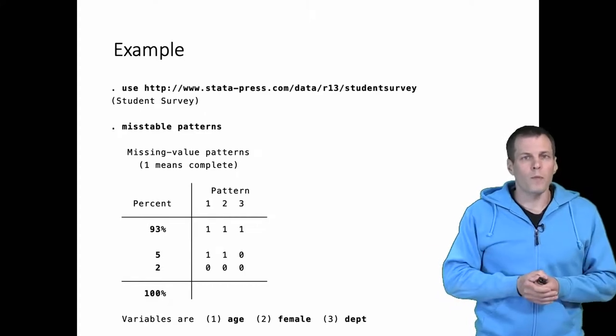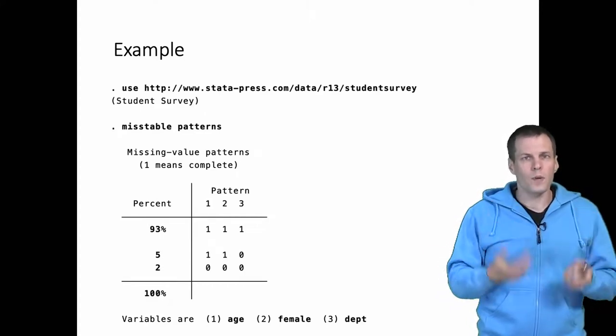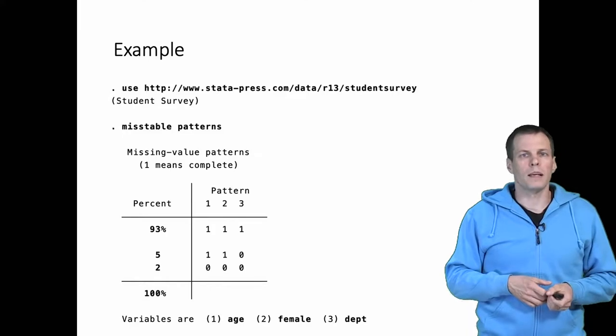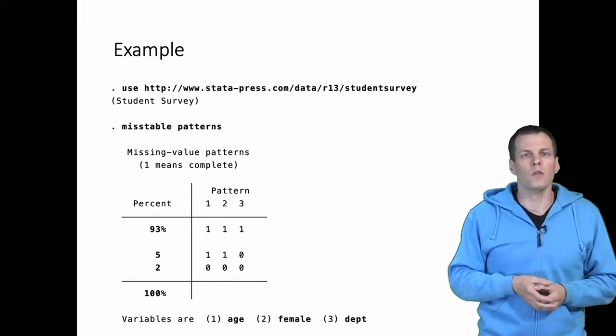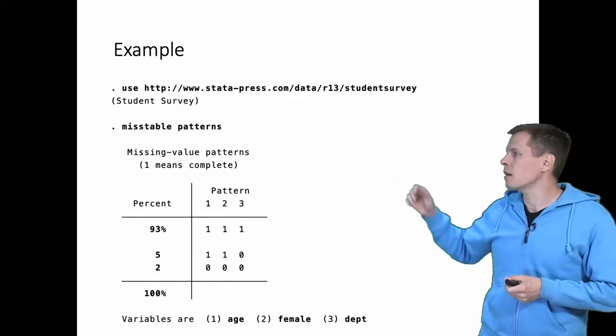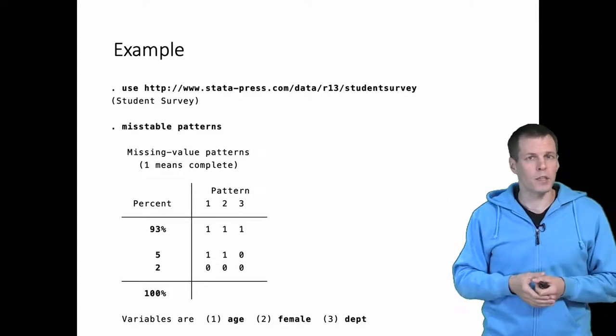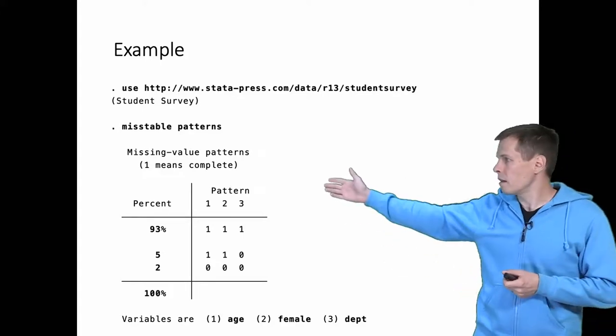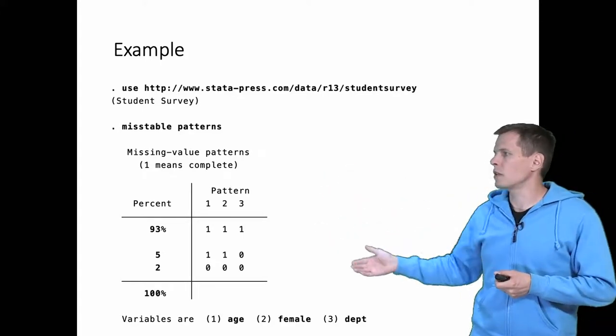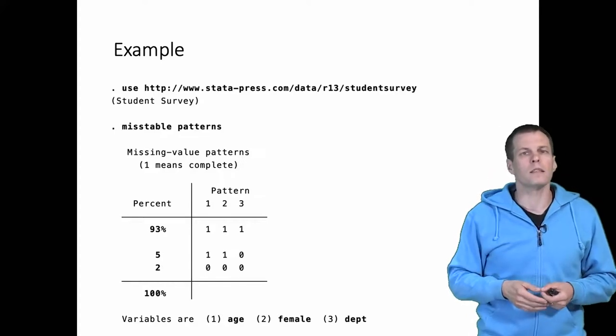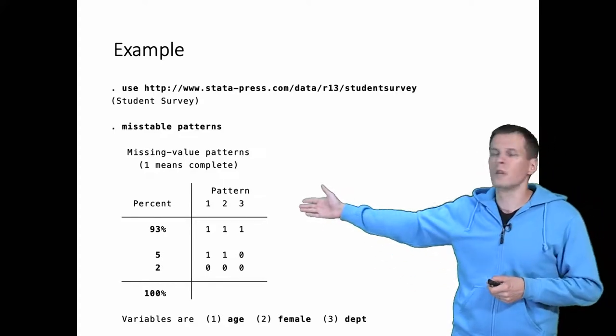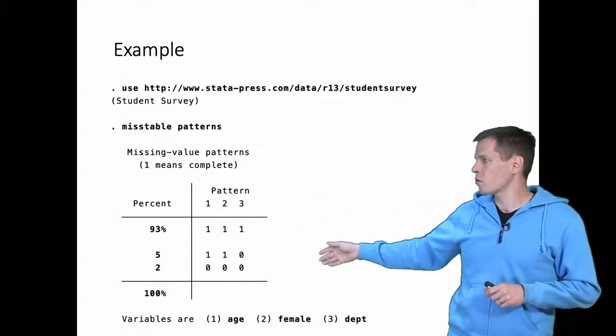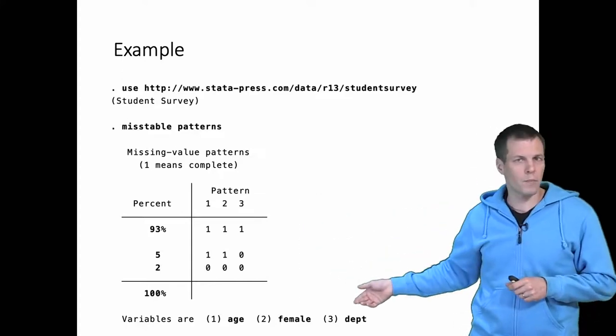Here's an example of missing data analysis. Typically when you start working with a dataset that contains missing data, you inspect the patterns. This is done with R and we just print out the missing data pattern. What comes out is simply a list of these cases. So there are three variables that have missingness. The first variable is age, second is female, and third is department.